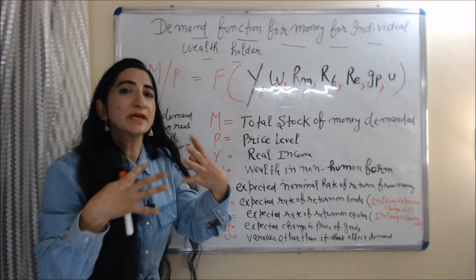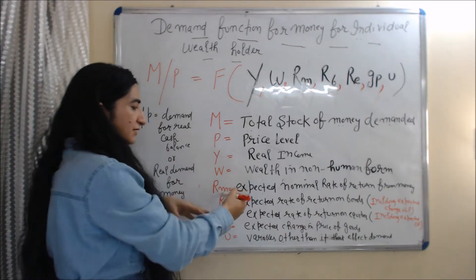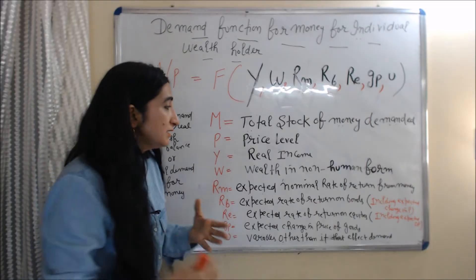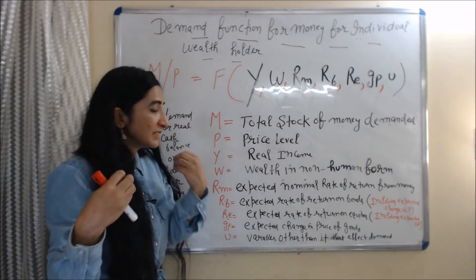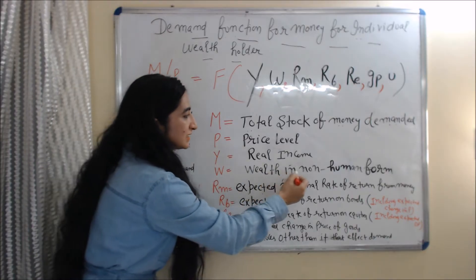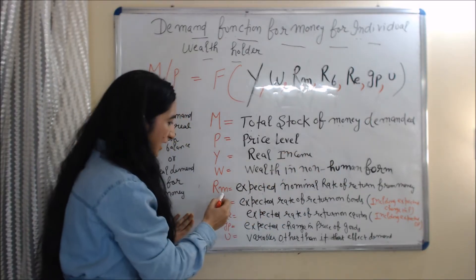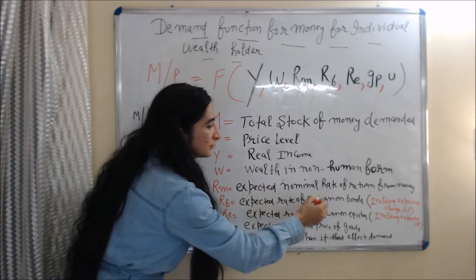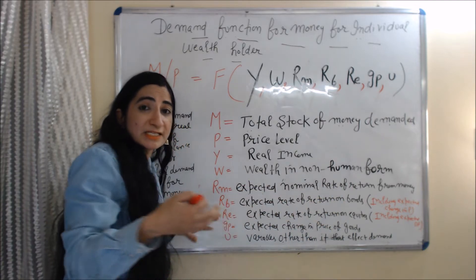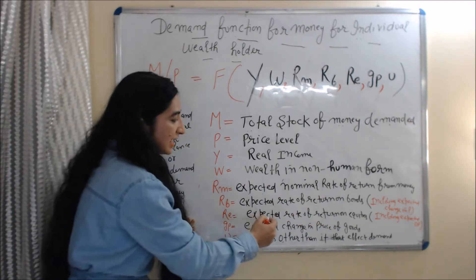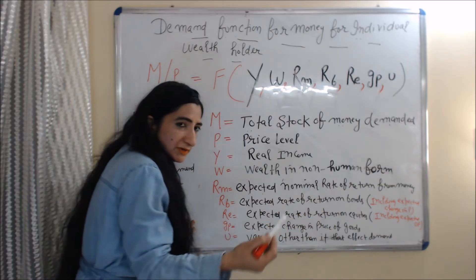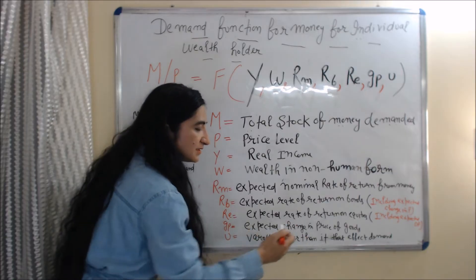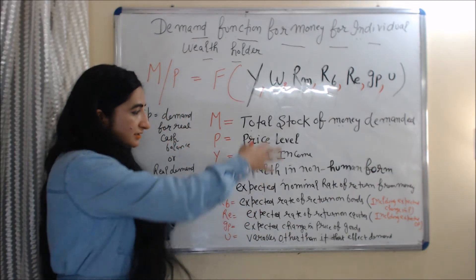Real demand for money is a function of all these variables. Here, y is real income. We can hold wealth in various forms — money, bonds, equities, non-human goods — so w represents wealth in non-human form. rm is the expected nominal rate of return from money, rb is the expected rate of return on bonds including expected change in price, re is the expected rate of return on equities including expected change in price, gp is the expected change in price of goods, and u is any other variable affecting demand.